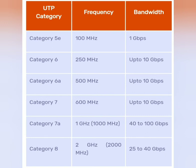Category 6A has a frequency of 500 MHz and a bandwidth of up to 10 Gbps. Category 7 has a frequency of 600 MHz and a bandwidth of up to 10 Gbps.